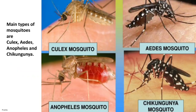There are many types of mosquitoes, but some of the common types are Culex, Aedes, Anopheles, and Chikungunya.